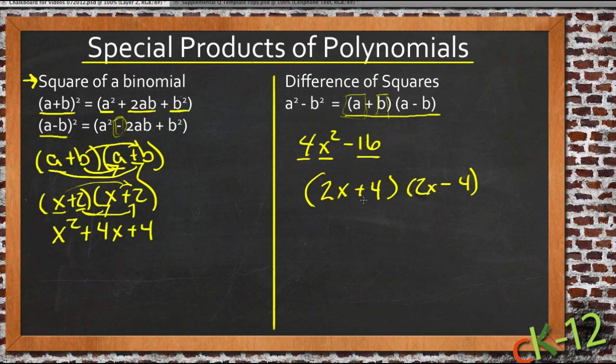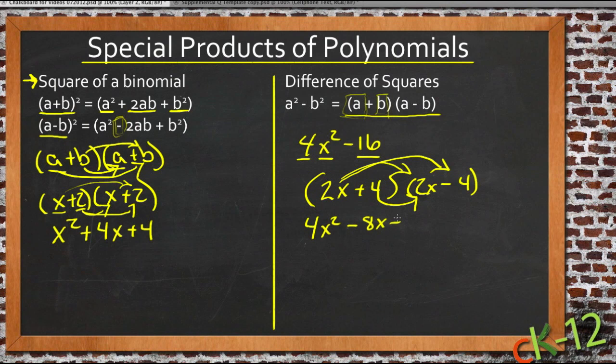This has been factored now. And you can verify it. If you multiply it back out, you have 2x times 2x, that's 4x². Then you have 2x times negative 4, which is negative 8x. But then you have 4 times 2x, which is positive 8x. So those two things cancel out. Negative 8x plus 8x just goes away. And then finally, the last term is 4 times negative 4, that's negative 16. So we have 4x² - 16, just like we started with.